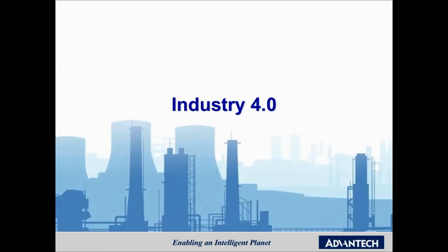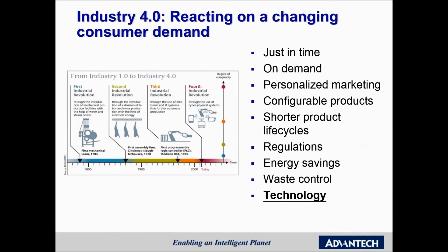Industry 4.0 means the fourth generation of industrial mechanization and automation. For now, production is mainly driven by the fast-changing consumer demand. We see trends like just-in-time management and configurable products. But production is also influenced by regulations, energy savings, and waste control. These topics are asking for far more flexible production, which is relying on fast-evolving technologies.